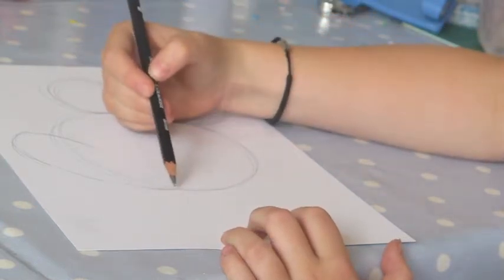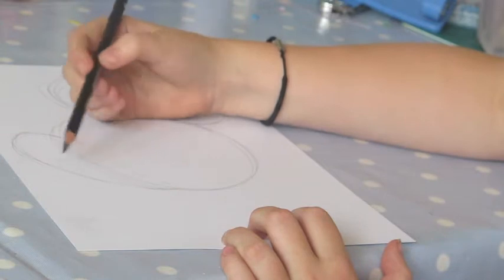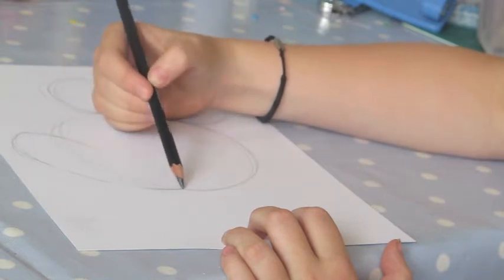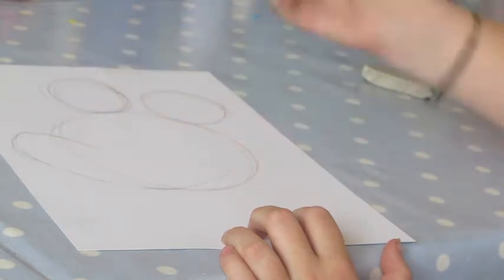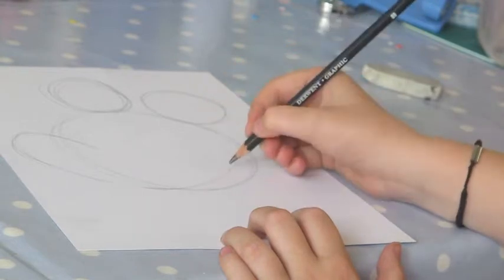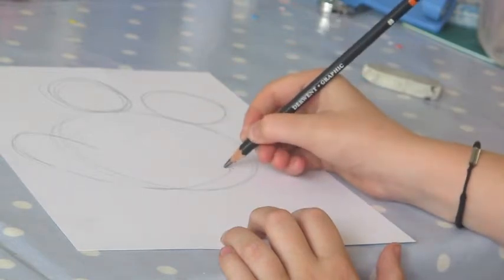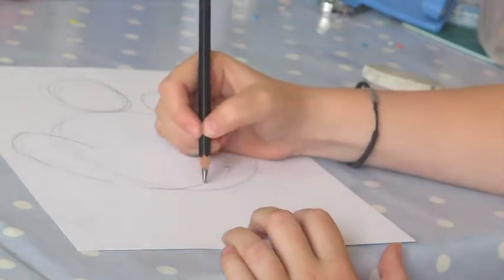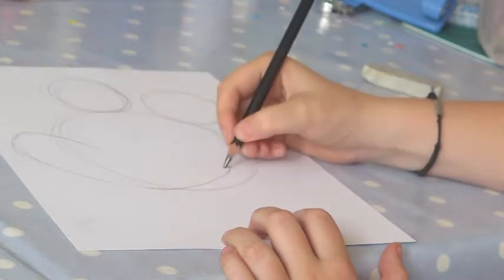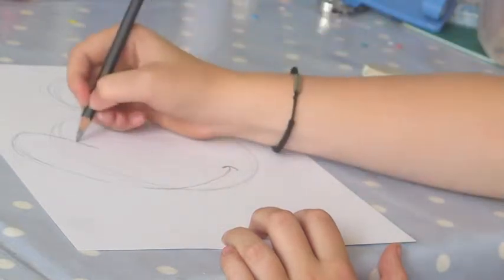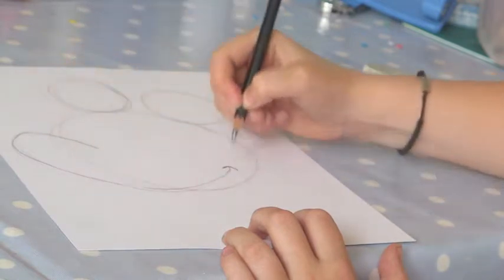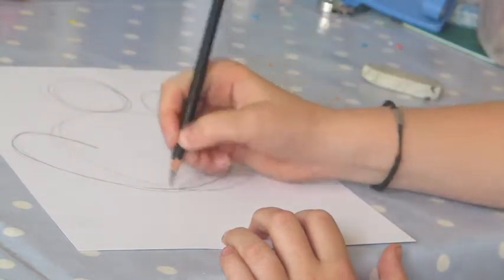So next, you get the bottom line of the snout and you bring it up to form a smile. And then you draw in the little dimple there. Like an upside down U, basically. Then go over the line.